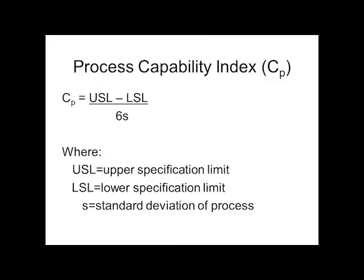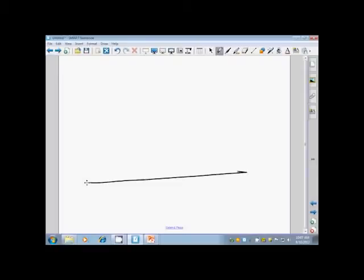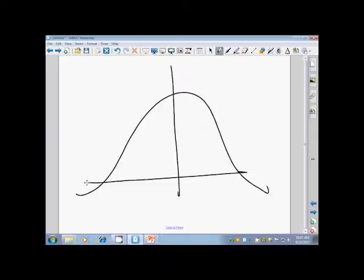When we take a look at the capability index, what we're really looking at here is a bell curve. You'll have to forgive me, drawing is not my forte. But we're looking at literally our mean with three standard deviations in each direction.